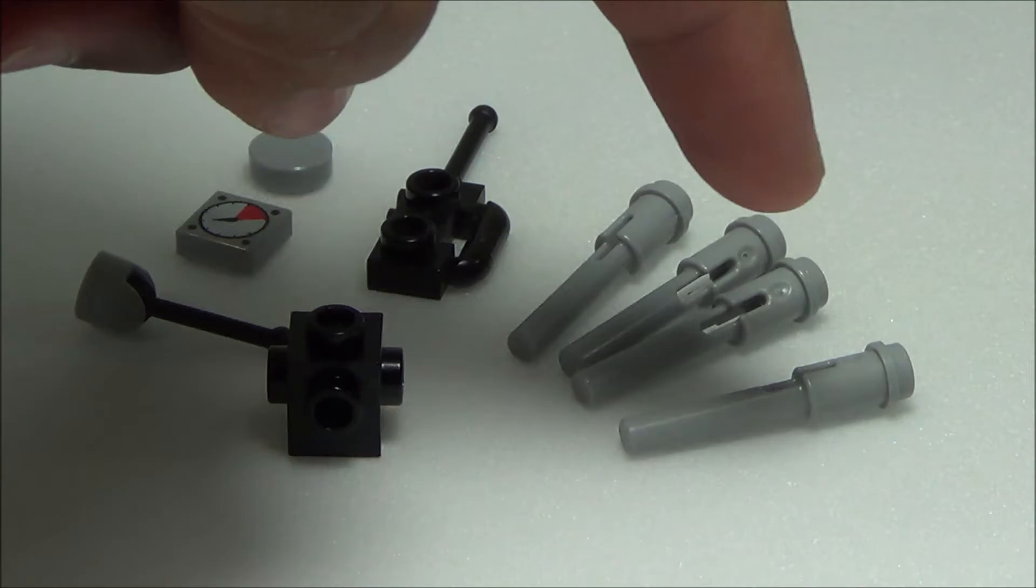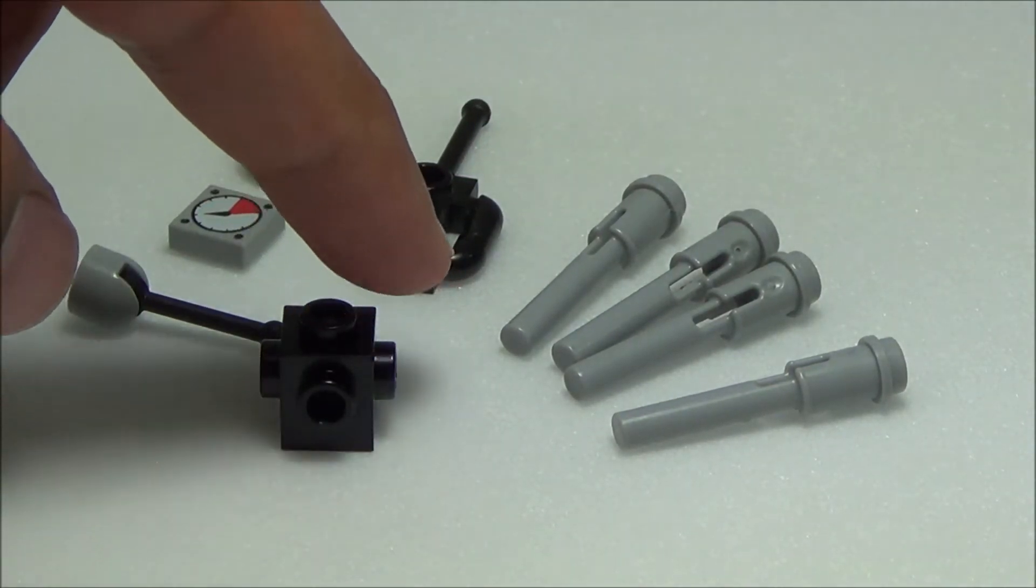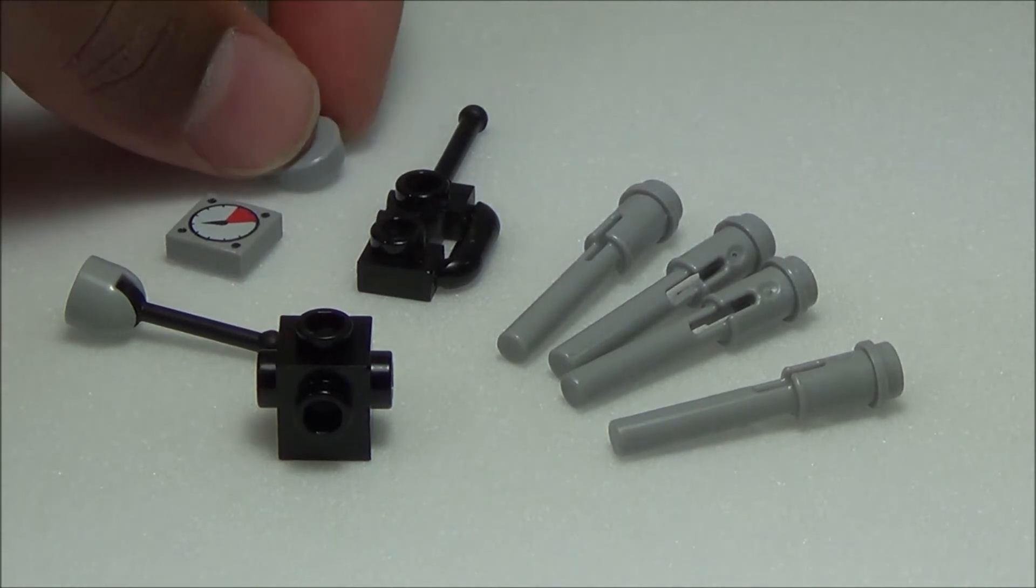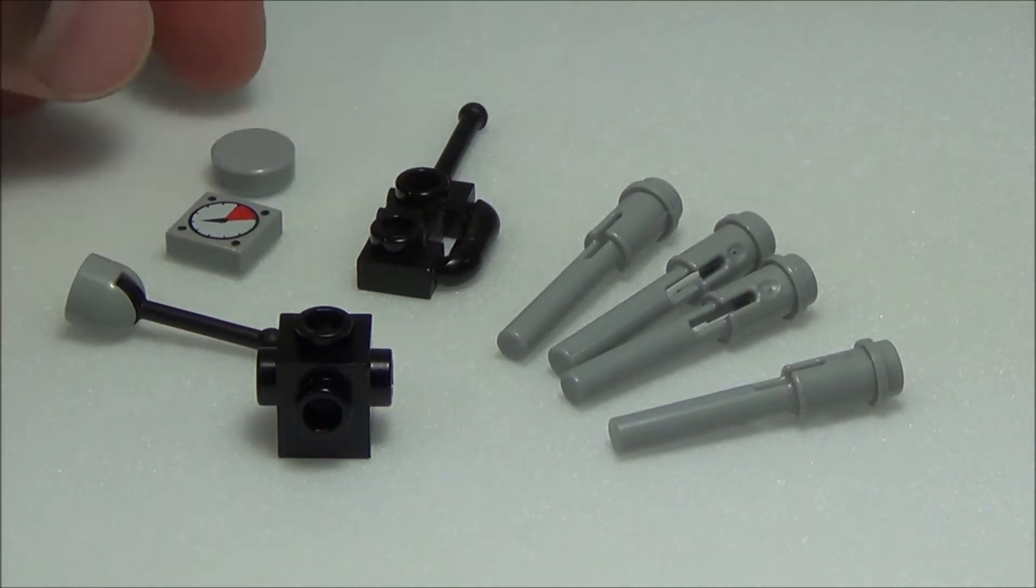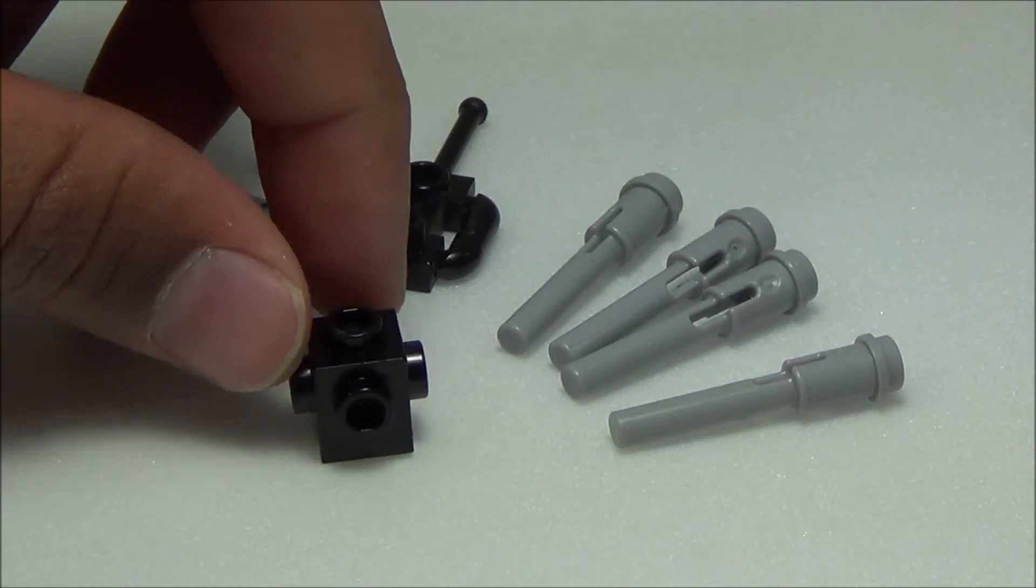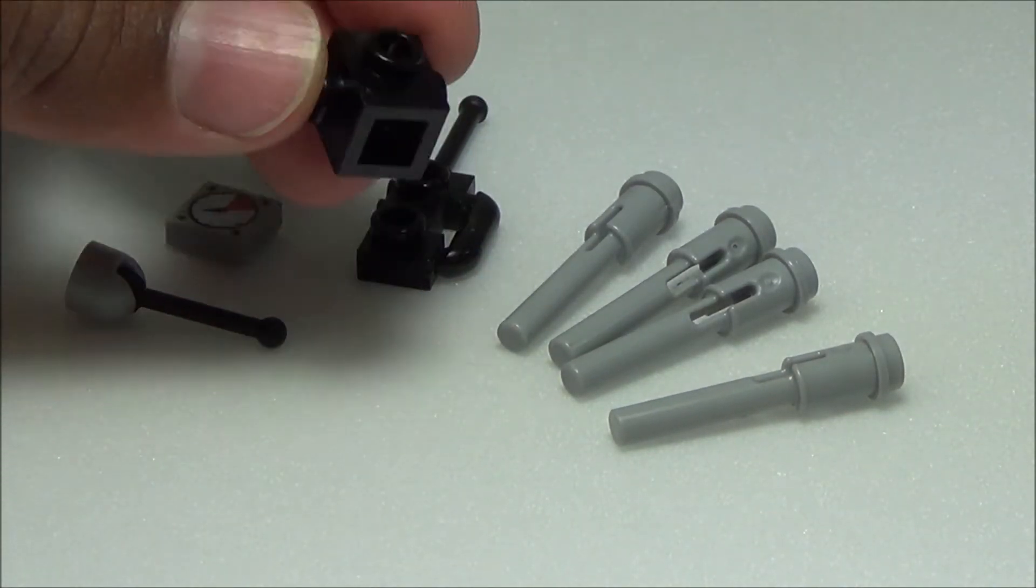These are the things you need. You need four flick missiles, one walkie-talkie, one of these little round pieces (I don't know what they're called but they're like a stud without the top, with just a flat top), a gauge, an antenna, and then one of these modified blocks with a stud on all sides except for the bottom where it clicks into something.